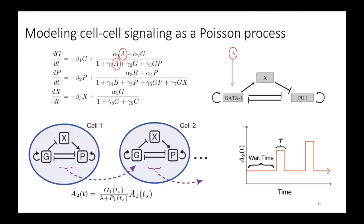Then the way that we incorporate the Poisson process is by, so for some fixed wait period, or for some wait period that we sample from an exponential distribution, the value of the parameter A in cell two is set to some initial value A0.